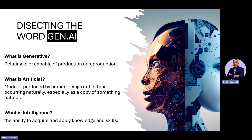So 'artificial' — the 'A' in AI means artificial, and the 'I' means intelligent. Artificial means made or produced by human beings rather than occurring naturally, and especially as a copy of something natural. So it's important to know that AI has the ability to reproduce itself — that's the generative part. Secondly, it's something that is made by humans; it's not a natural occurrence, it's the product of human development.